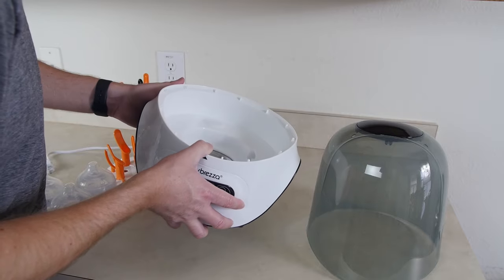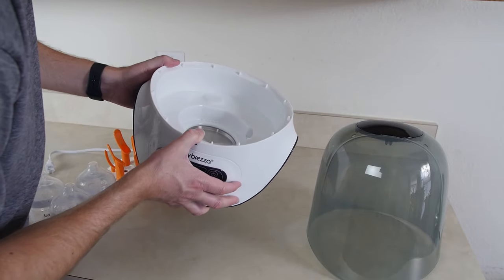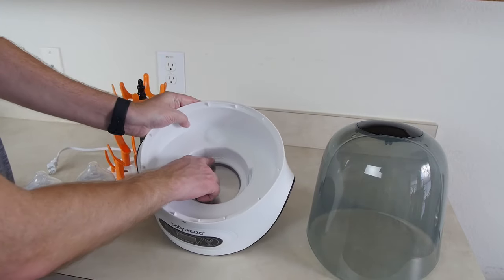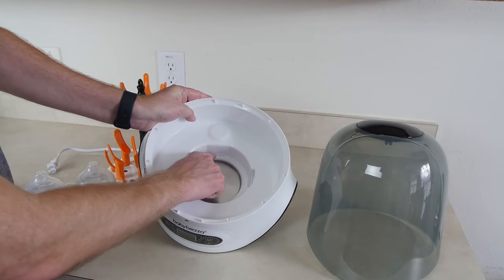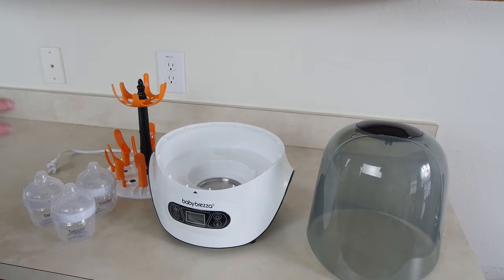Inside here there is a fill line. 120 milliliters. It looks like it just covers up the base so whenever you're filling this thing up you want to just go up to this little notch thing right here. That's as high as you want to go for filling up this Baby Brezza sterilizer dryer.